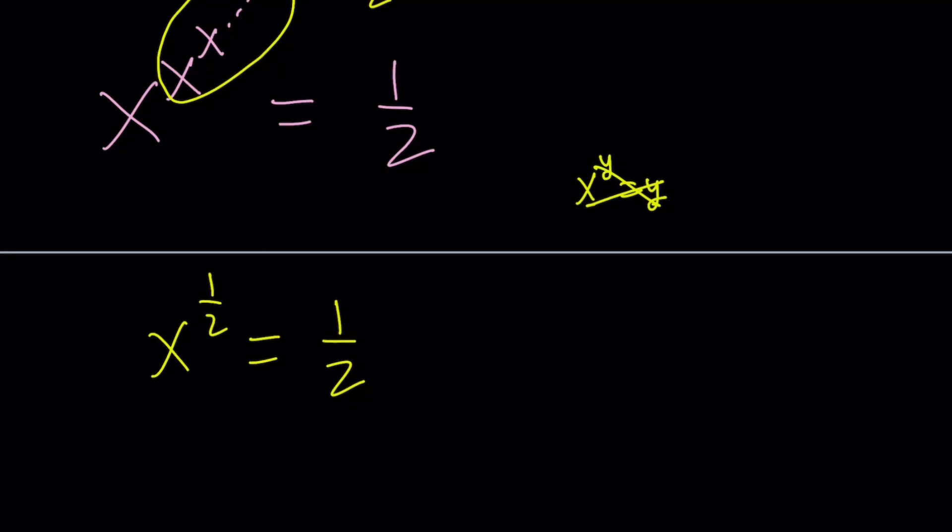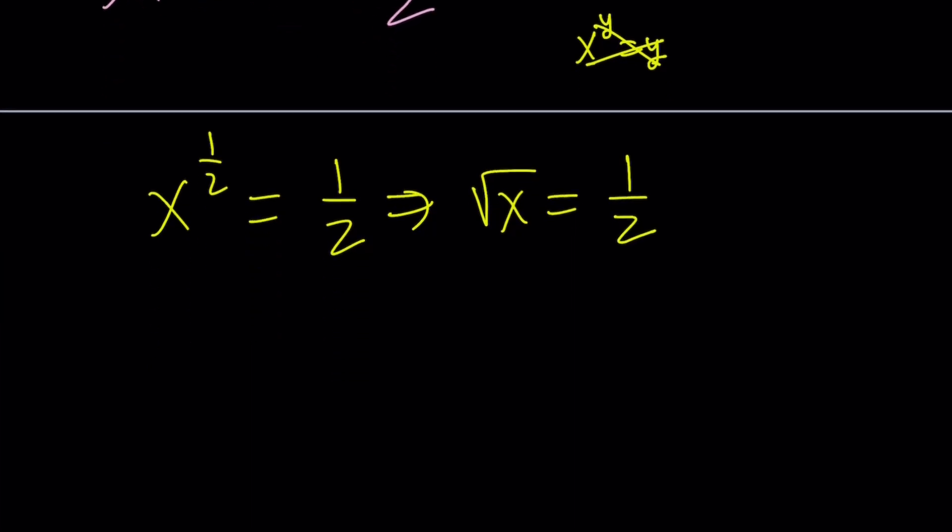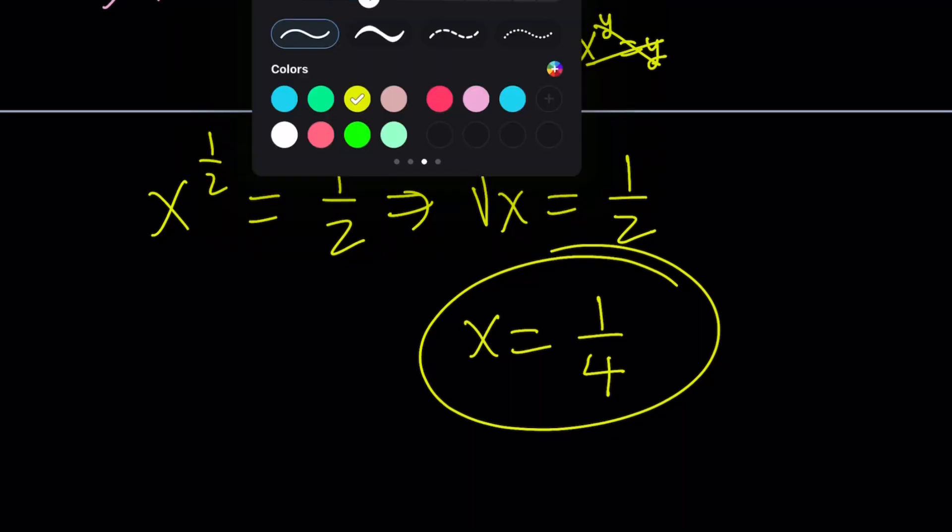From here, x to the power 1 half means square root of x. From here, we can square both sides, and we'll get the x value: x equals 1 fourth. Let's see if this is acceptable, or when is this value acceptable. We're going to look at it from a functional perspective.